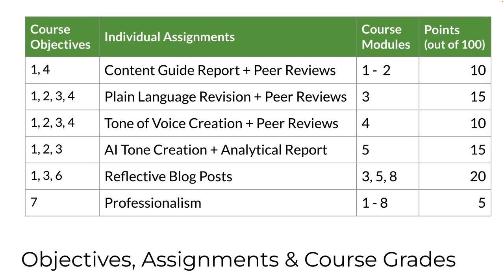Let's talk about the actual assignments for which you earn grades. This table summarizes it — you'll see this also on Canvas. These are all individual assignments, including assignments along with learning objectives they support and the way in which each of them contributes toward the total of 100 points that determine your course grade. You'll analyze two tone-of-voice content guides from industry in a report and review the work of your classmates. Then you do a series of revision and analysis activities with tech content, concentrating first on plain language and then on alternative tones of voice. Most of that work will involve reviewing the work of classmates. You'll also create and analyze tone-of-voice in content created by an AI tool. You'll publish three blog posts reflecting on what you're learning during the course. And at the very end, you'll be evaluated for your professionalism.